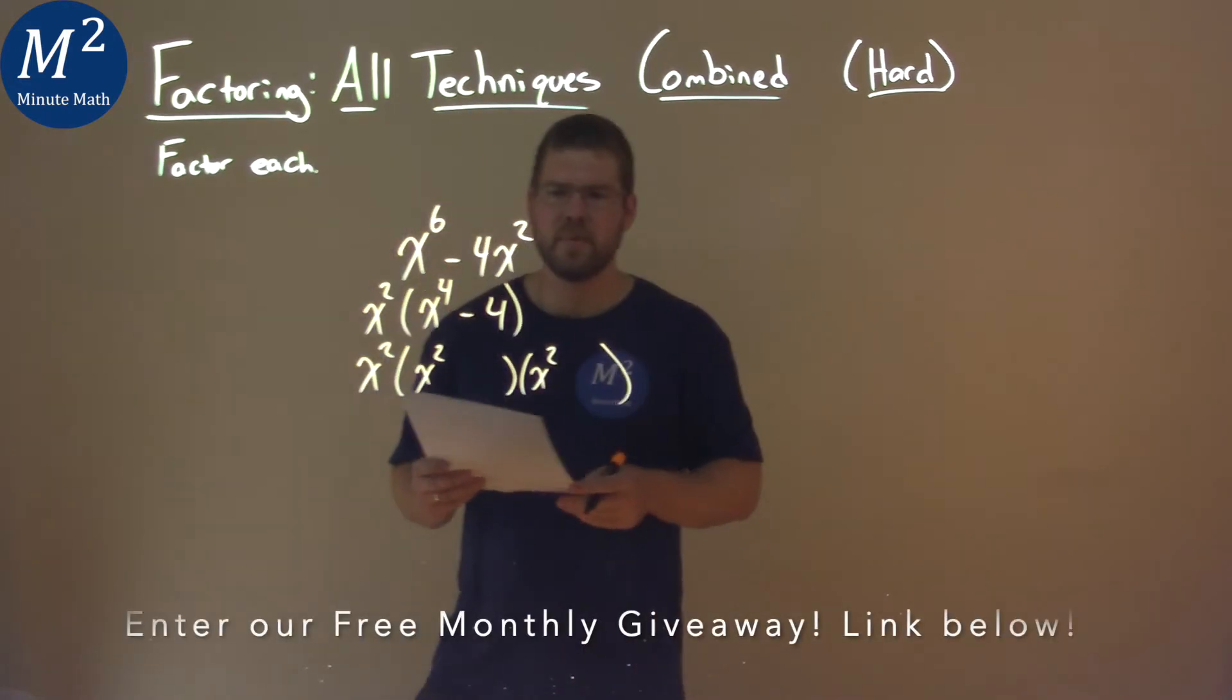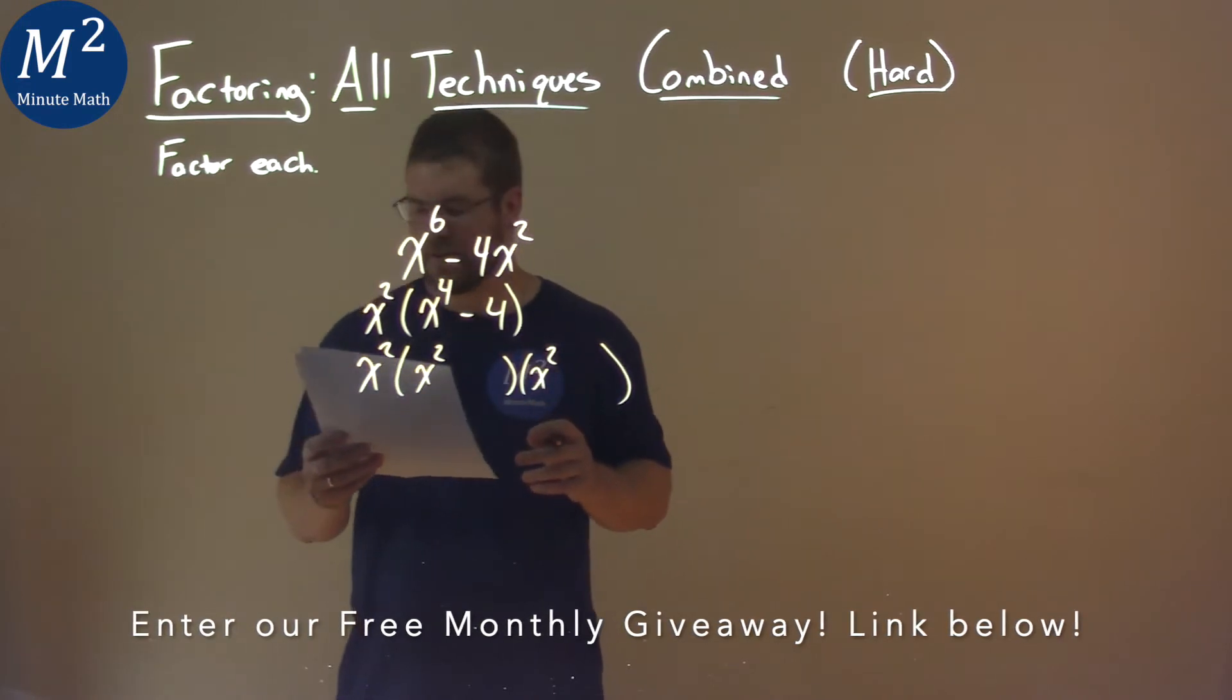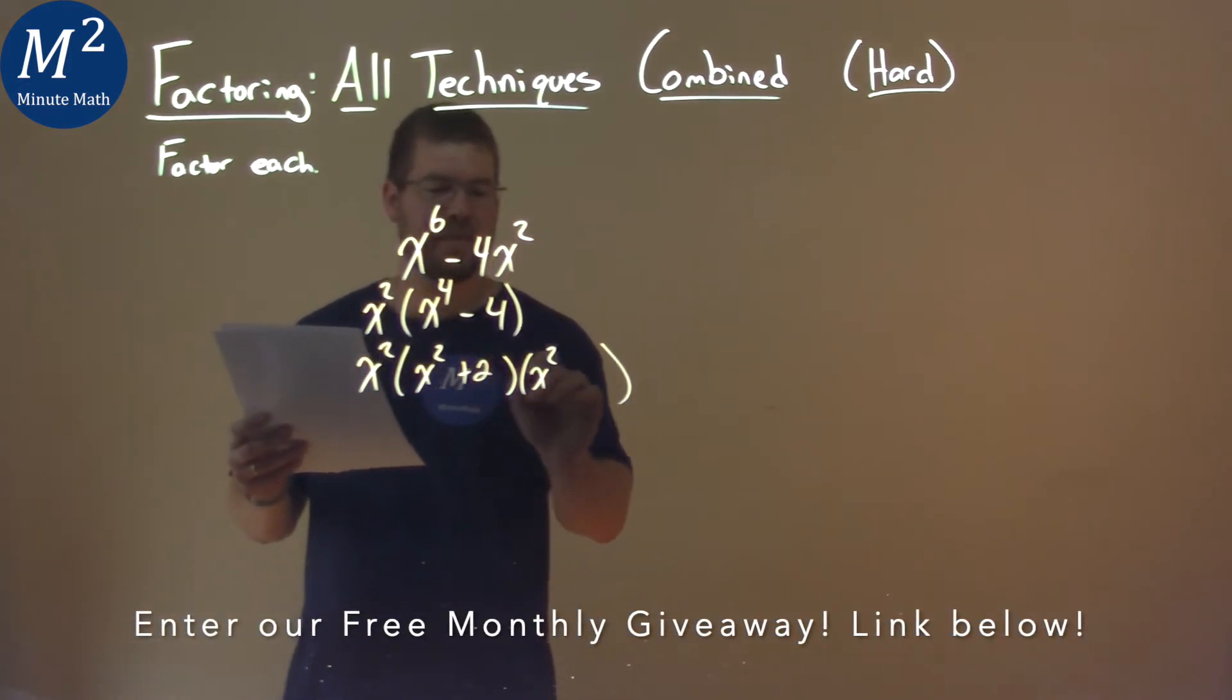So we'd look at our 4, and say what term is multiplied to be negative 4, but added to be 0, the b value here. And that's a positive 2 and a negative 2.